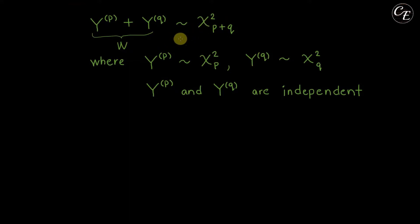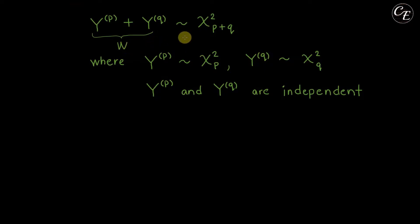To do that, we need to use the theorem that if we have random variables which have the same moment generating functions, then they have the same distribution. Then what we need to do is to prove that W has a moment generating function equal to the moment generating function for random variables which have this distribution.